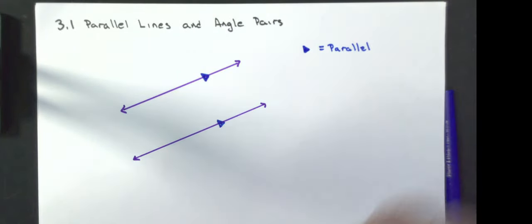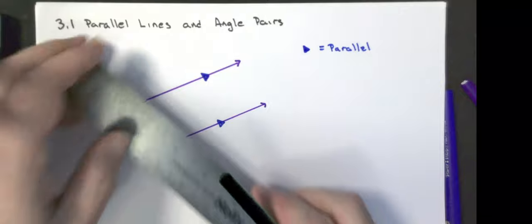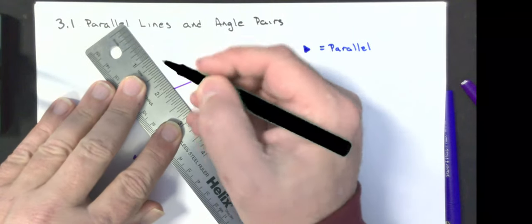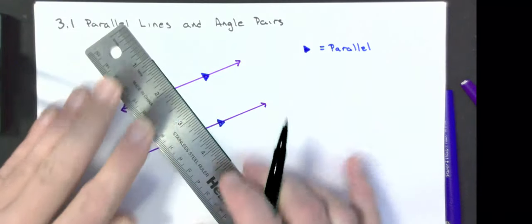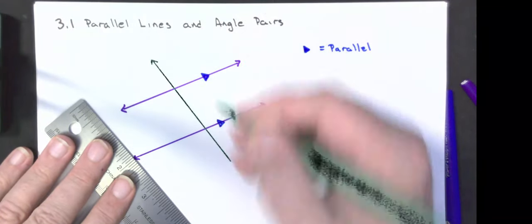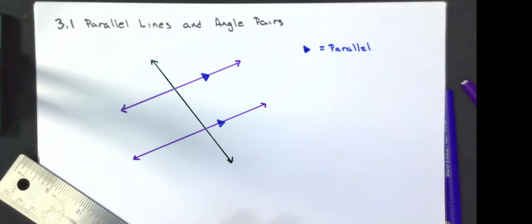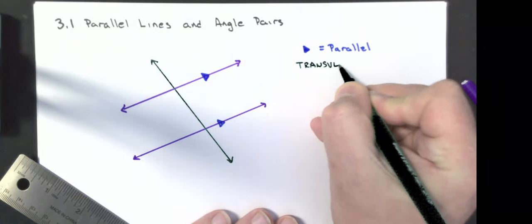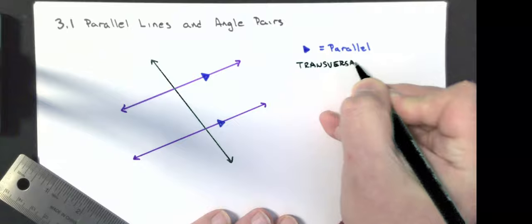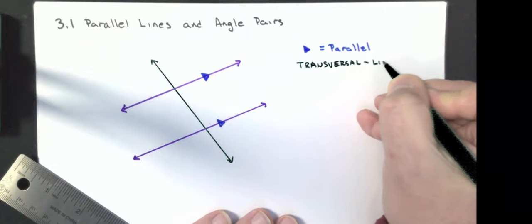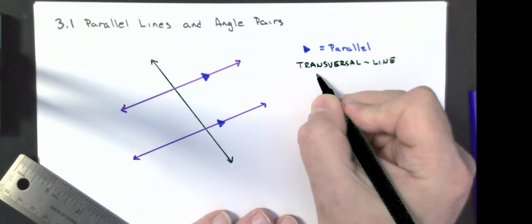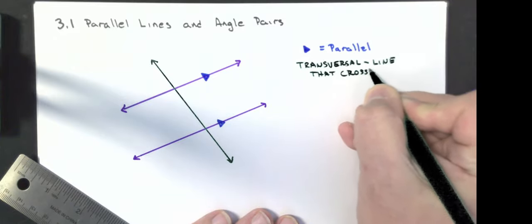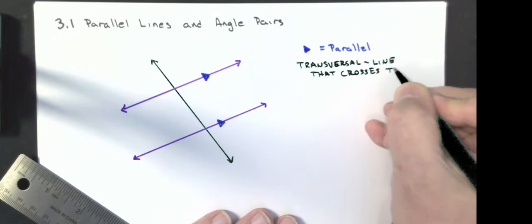Now I'm going to draw a line that crosses these other two lines. That line is called a transversal — a transversal is a line that crosses two or more lines.